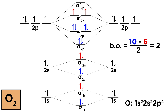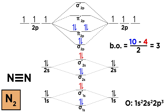We can predict the covalent bonding behavior of any two atoms using orbital diagrams like this one. Let's look at nitrogen — the bond order calculation turns out to be three, which is why atoms in a nitrogen molecule have a triple bond between them.